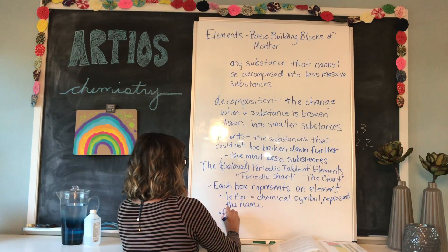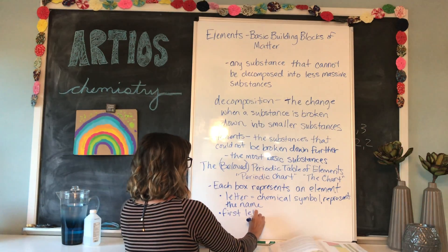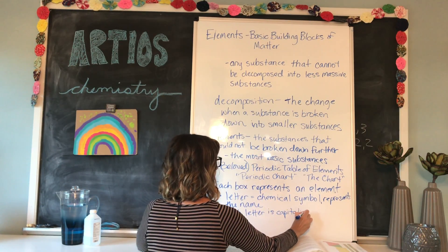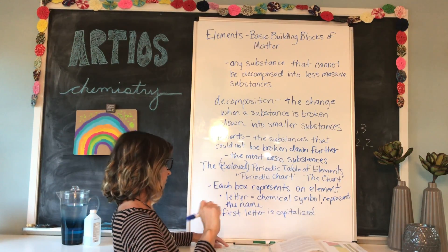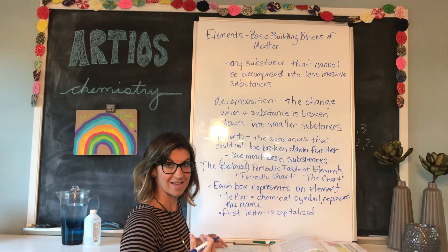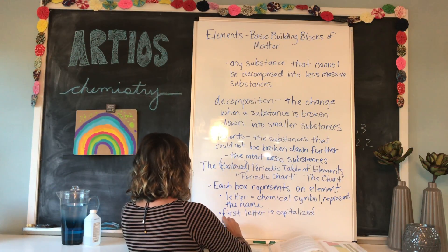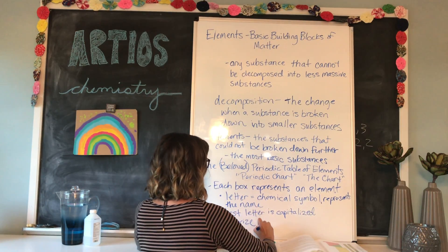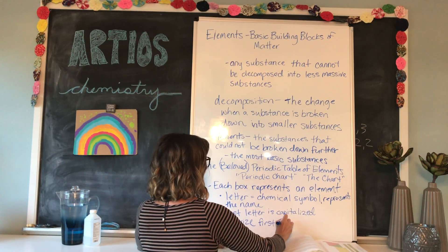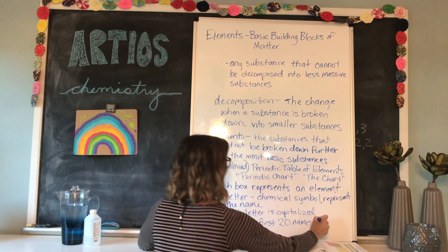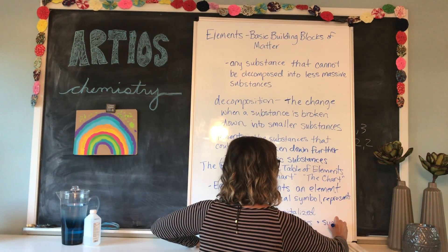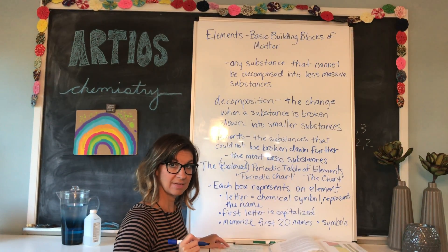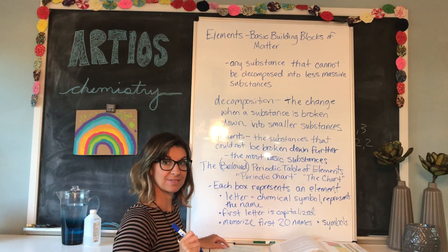The chemical symbol stands for the name of the element — it could be in English or in Latin, so hopefully you've been brushing up on your Latin skills. The first letter is capitalized — just like my name — so that'll be easy to remember. If they have two or three letters, the second and third letters are not capitalized. You will need to know, by the end of this module, the first 20 names and symbols. You don't have to memorize them in order, and you don't have to memorize the numbers in the boxes — just the names and symbols for the first 20.